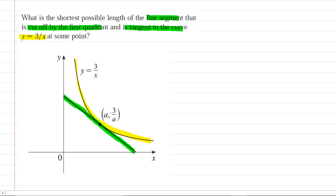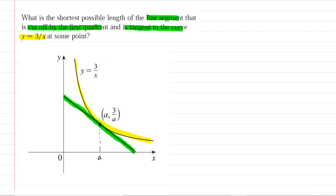That is an arbitrary selection of variables. The x-coordinate of that point we are calling a. The y-coordinate we obtained by plugging a into the equation. At that point, the green line segment and the yellow curve intersect because the green segment is tangent to the yellow curve. Because they intersect, they have the same y-coordinate. Therefore, to find that y-coordinate we can plug a into the equation — that's where we're getting the 3 over a from.